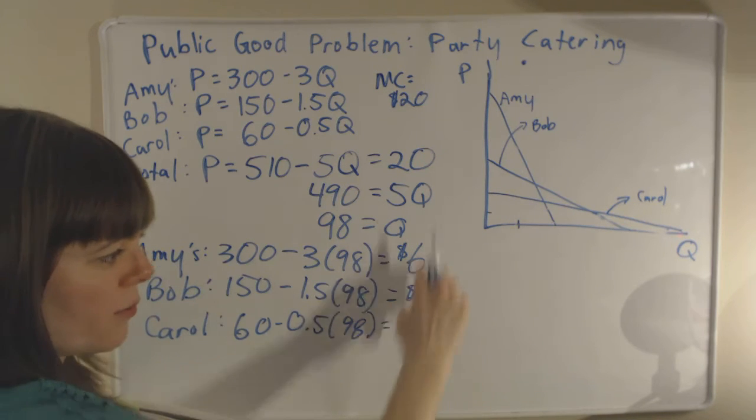So we can see that for every person invited to the party, Carol will pay $11 of their plate, Bob will pay $3 of their plate, Amy will pay $6 of their plate. That luckily adds up to $20, just like it should.